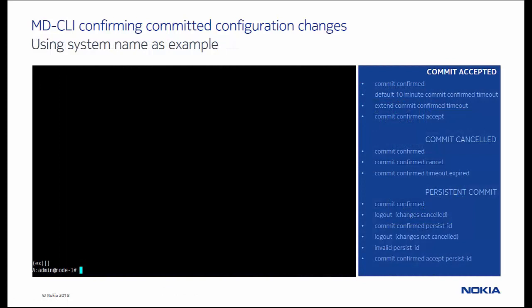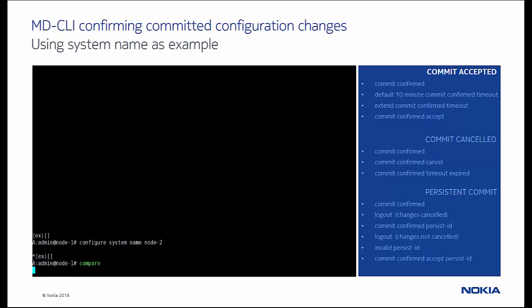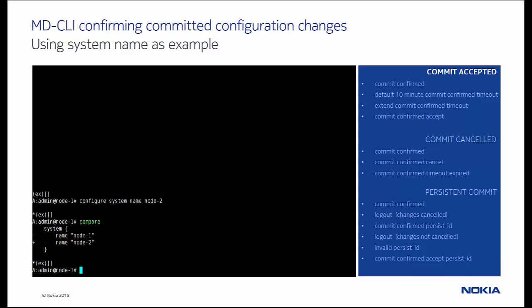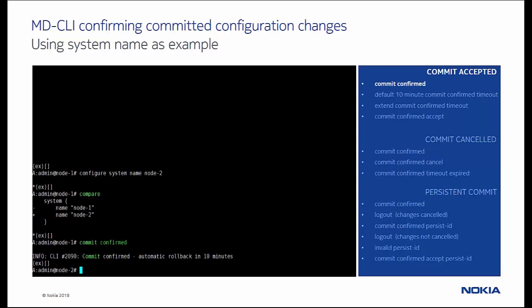In the first example, we set the system name to node 2 and use the compare command to see the uncommitted changes. We commit the changes using the commit confirmed command and observe the successful activation via the new system name, node 2. A commit expiration timeout interval of default 10 minutes is started, and within this time an explicit confirmation is required to confirm that the changes become permanent.